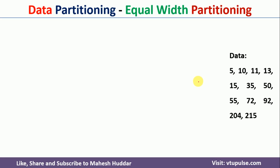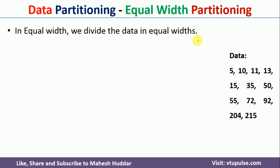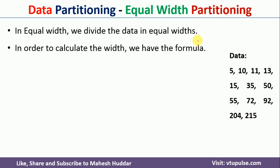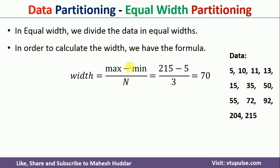Coming to the second method, equal width partitioning: first we calculate the width. The width is equivalent to (max minus min) divided by n. Max is equivalent to 215 in this case, and min is equivalent to 5, divided by 3, which gives a width of 70.